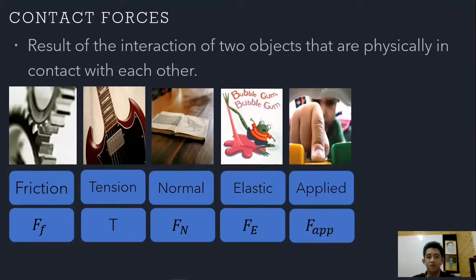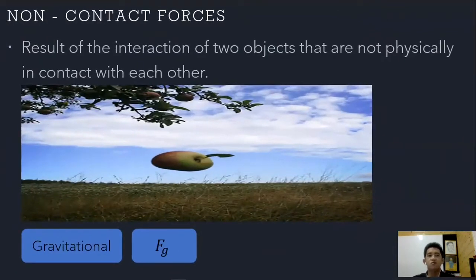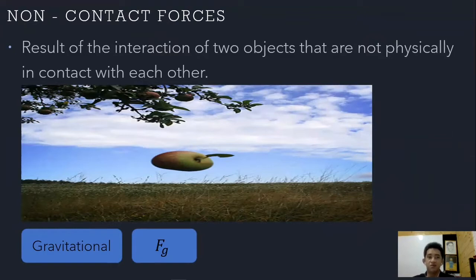We also have applied force, FA or FAPP, which is either pushing or pulling. For non-contact forces, they result from the interaction of two objects not physically in contact — there's a space between them. A concrete example is the gravitational force, where the core of the Earth and an object like an apple interact through gravitational force without touching.